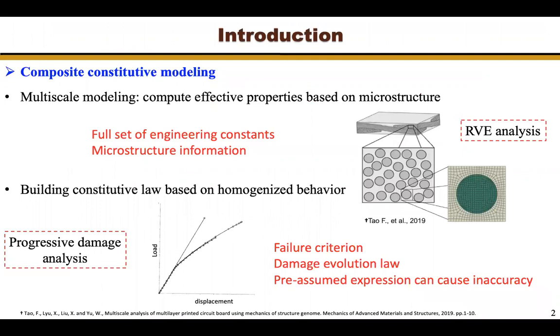Composite material is heterogeneous and anisotropic. Many studies have been done to model the constitutive behavior of composites. Multiscale modeling, such as RVE analysis, is typically used to compute effective properties based on microstructure. But the multiscale analysis needs a full set of engineering constants of their constituents and also the microstructure information.